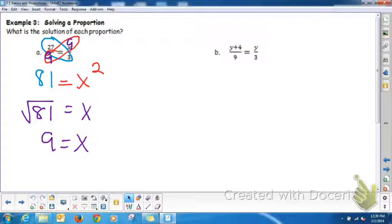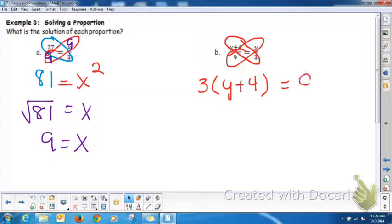Another example. We're going to use the cross product property here to solve for y. When you multiply, we're saying 3 times y plus 4 is equal to 9 times y. In this situation, when there's an expression on top, you need to use the distributive property. So we want to distribute 3 times y and 3 times 4 is equal to 9y.